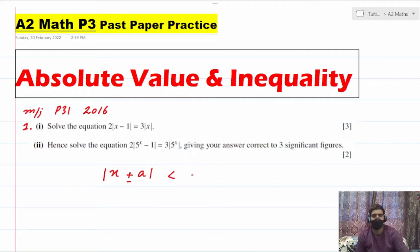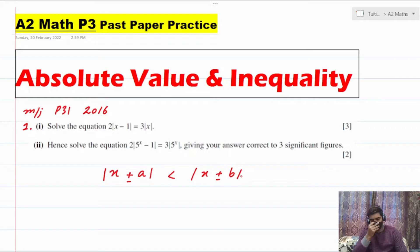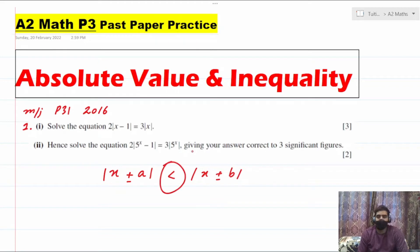On the other side you'll be given something like (x + b) plus or minus whatever. So this is the general syntax of the question: you have absolute value on one side, absolute value on the other side, and then you have an inequality sign or equality sign between these two.